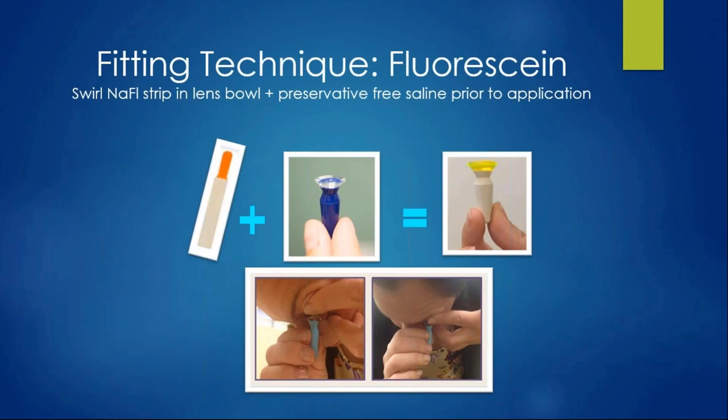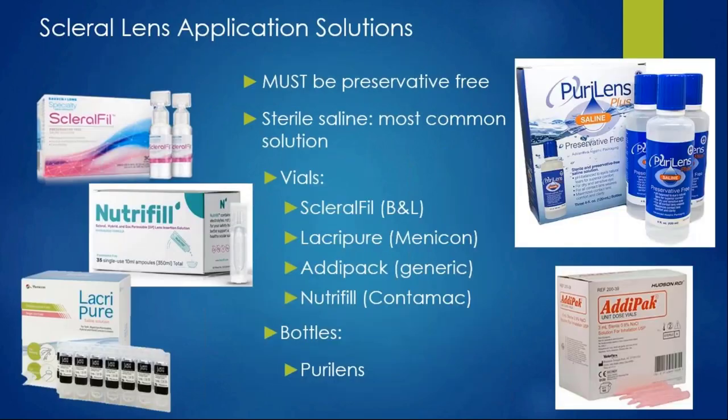When putting the lens on the eye, place it on the plunger and dab a little fluorescein into it so you can see the tear reservoir. Always fill with preservative-free solutions, as the lens bathes the eye for hours and we never want preservatives on these fragile corneas for long. Whether you use the bottle form like Pure Lens or the many vials now available, always preservative-free. We'll dive into which ones are buffered versus unbuffered later.